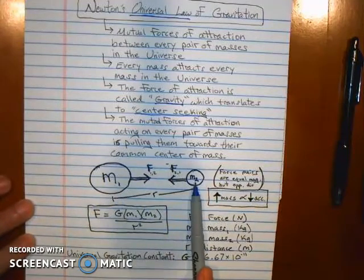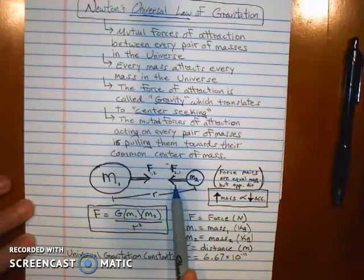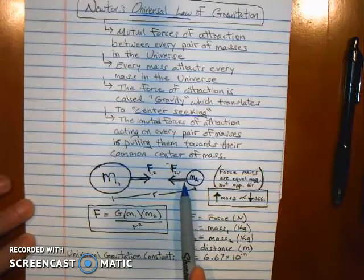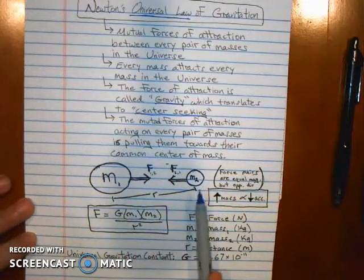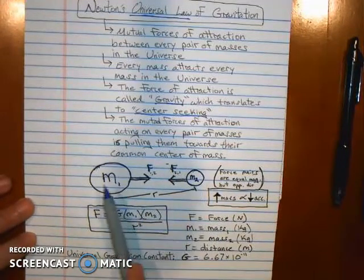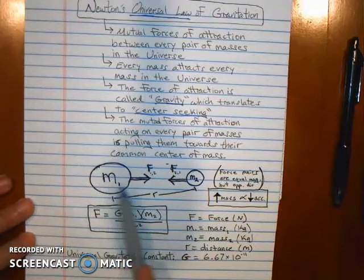And the smaller mass, which receives the same amount of force in return, will move more. That's why the moon orbits the Earth, not the Earth orbiting the moon. That's why the Earth orbits the sun, and not the sun orbiting the moon.